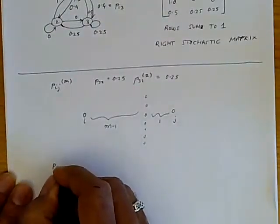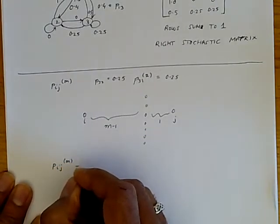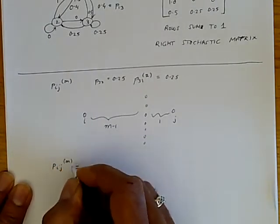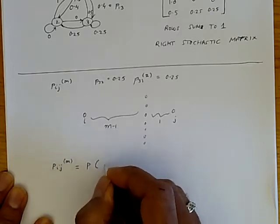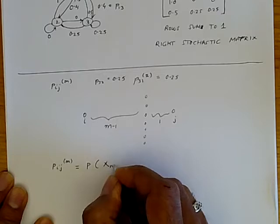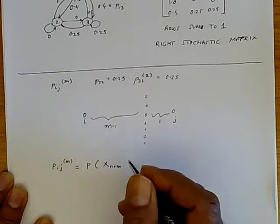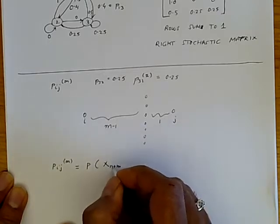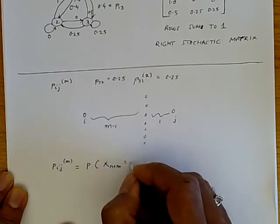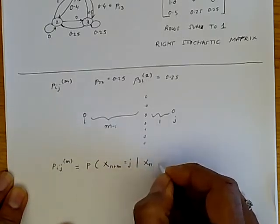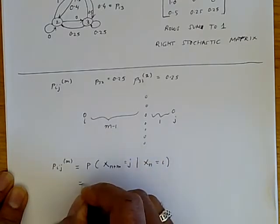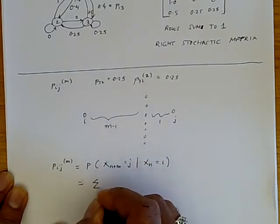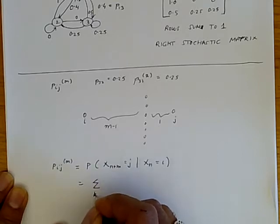So Pij in m steps is given by the probability that the state at n plus m, so let's say it's state n right now, n plus m is equal to j, conditional on Xn, that's the current state now, equals i.